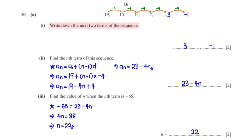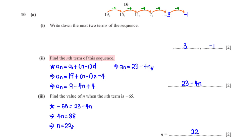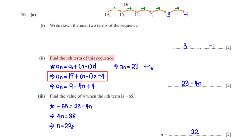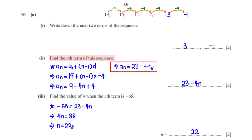Write down the next two terms of the sequence. The terms have a common difference of negative 4. Subtracting 4 from 7 gives 3, and subtracting 4 from 3 gives negative 1. For the nth term: with first term 19 and common difference negative 4, the nth term is 23 minus 4n.